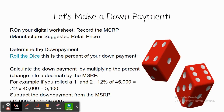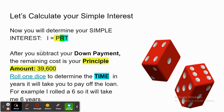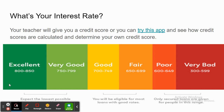After they determine what their down payment is, now they're going to calculate their simple interest. Notice it's actually color-coded — P for principal, T for time. There is a hyperlink here to a digital dice if you don't have dice or your kids want to use one. After they've determined their simple interest, they're going to determine what their interest rate is based on their credit score.